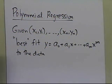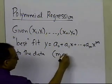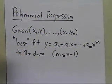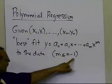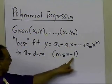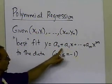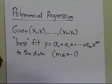m has to be less than or equal to n minus 1, because otherwise you won't be able to fit a polynomial to it. So when m is exactly equal to n minus 1, the regression polynomial will go through all the data points — in that case, that would be interpolation.